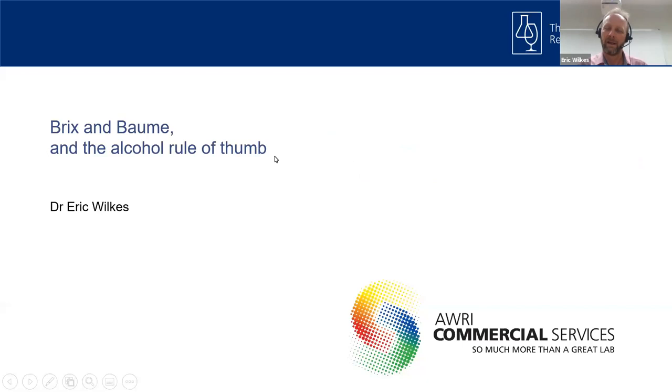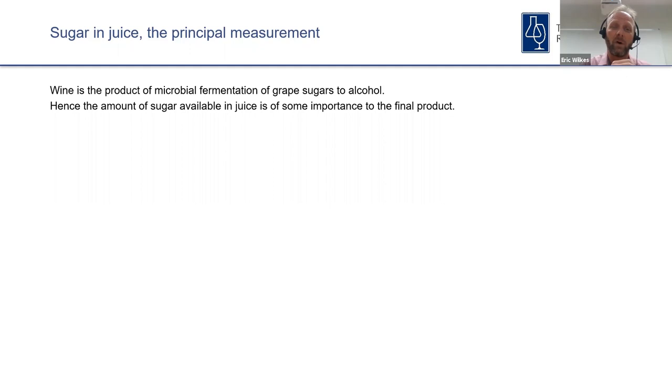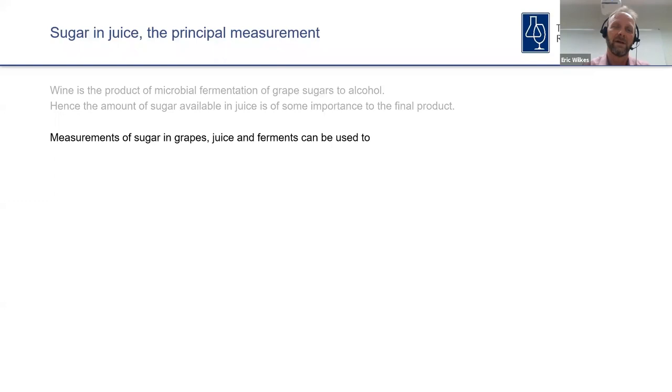Brix and Baumé and the legendary alcohol rule of thumb — this is a topic that could go for a very long time. The thing we really should remember is that sugar is one of the principal measurements we need to make, simply because wine is the product of the microbial fermentation of grape sugars to alcohol. So it's probably not surprising that measurement of sugar in juice and ferments should be considered critical to what we do.